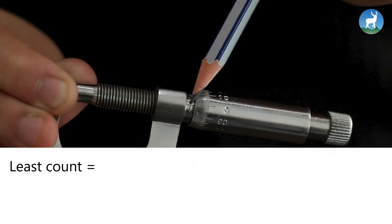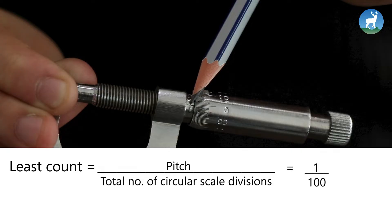So, the least count is pitch by total number of circular scale divisions, which is 1 by 100, and therefore 0.01.